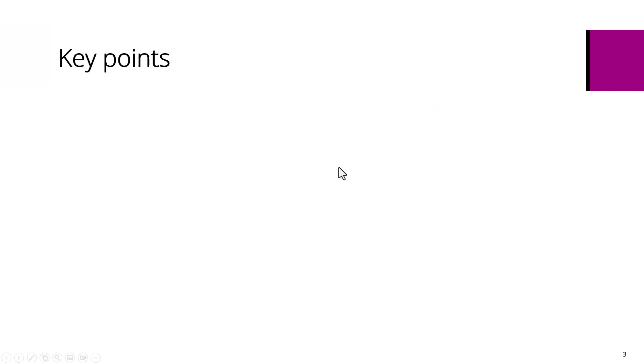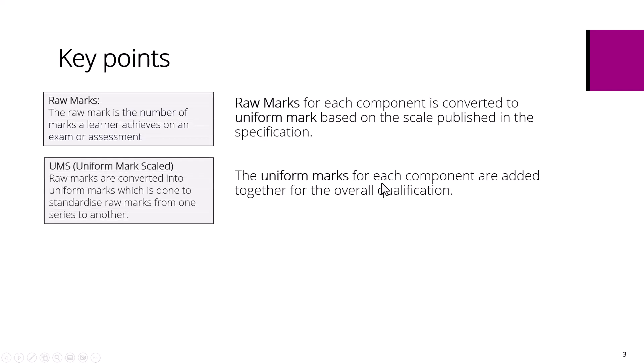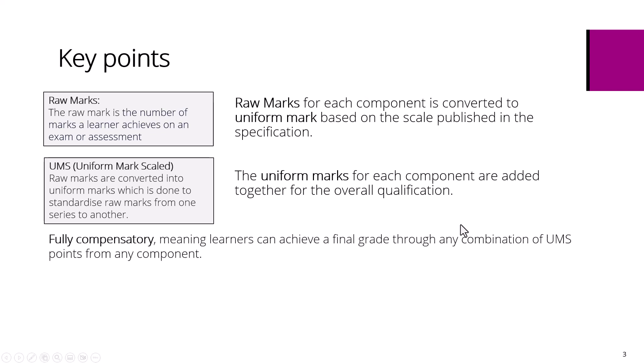Here are some key points for your information. Learners receive raw marks for each component assessment. The raw mark is the number of marks a learner achieves on an exam or assessment. Raw marks for each component are converted to uniform marks based on the scale published in the specification. This is done to standardise marks from one series to another.